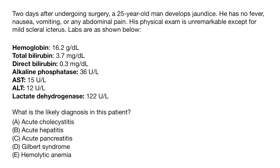Let's move on to question number two. Two days after undergoing surgery, a 25-year-old man develops jaundice. He has no fever, nausea, vomiting, or any abdominal pain. His physical exam is unremarkable except for mild scleral icterus. Labs show hemoglobin of 16.2 (normal), total bilirubin of 3.7 (elevated, above 1), and direct bilirubin of 0.3 (normal). This basically tells us that this is an indirect hyperbilirubinemia.